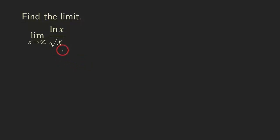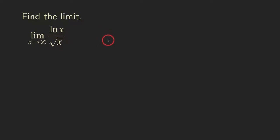Hello everyone, let's look at this limit problem. We have x approaching infinity and we want to see what this function is approaching. This function is ln(x) over the square root of x. We are usually going to be dealing with indeterminate forms, and for typical problems like this we can use L'Hôpital's rule to find the limit or to show that the limit does not exist.